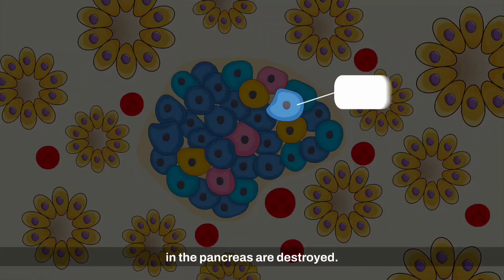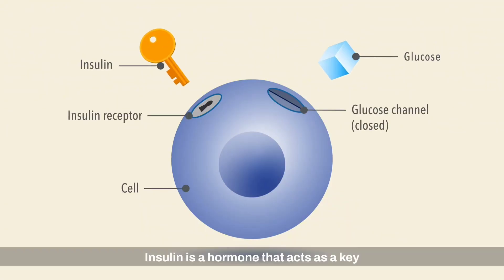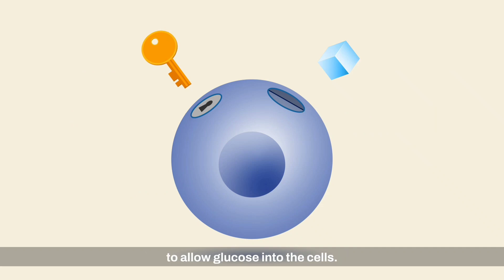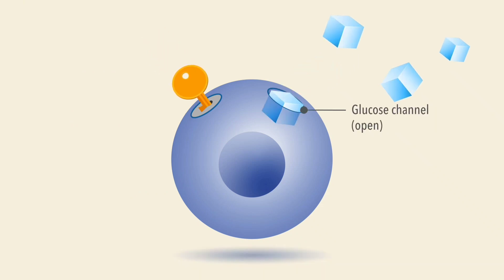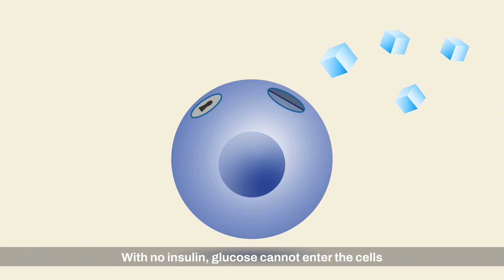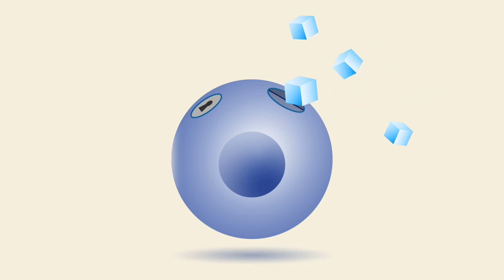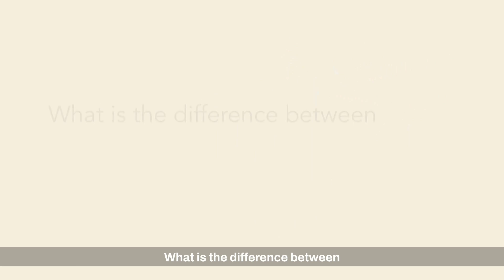In type 1 diabetes, the insulin-producing cells in the pancreas are destroyed. This is usually due to an autoimmune process. Insulin is a hormone that acts as a key to allow glucose into the cells. With no insulin, glucose cannot enter the cells and stays in the bloodstream.